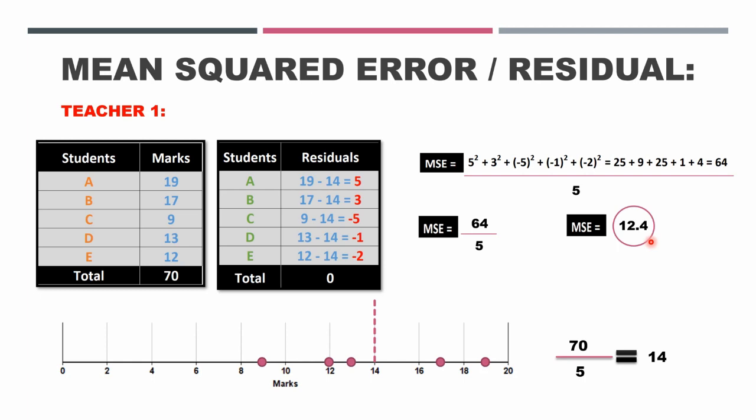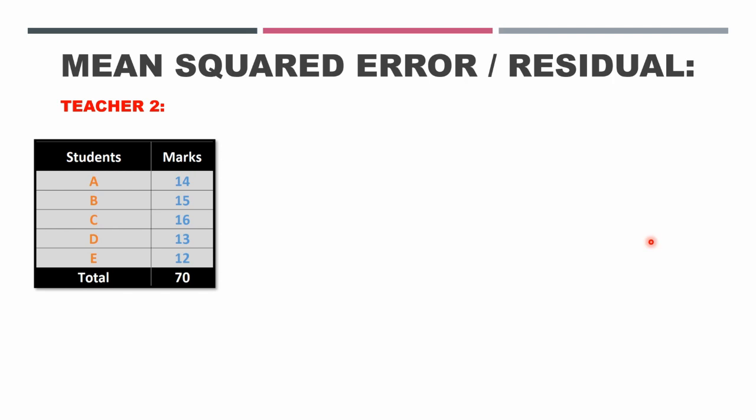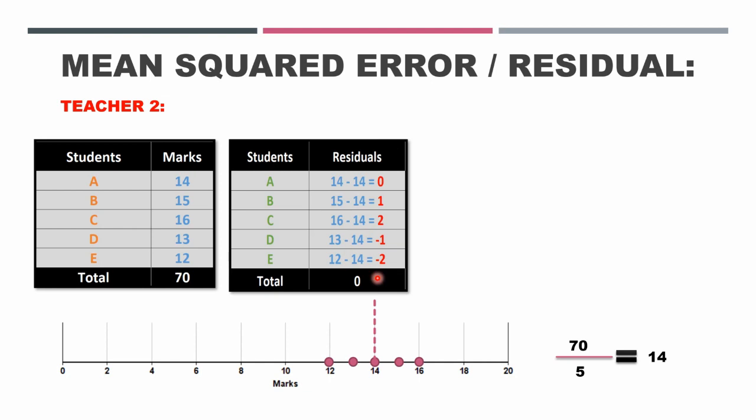Now the principal repeated the same steps for teacher number 2. So he again drew a number line, plotted the marks of each of the pupils, also plotted this mean value with a dotted line, and then he took the residuals, which is 14 minus 14, 15 minus 14, 16 minus 14, and so on.